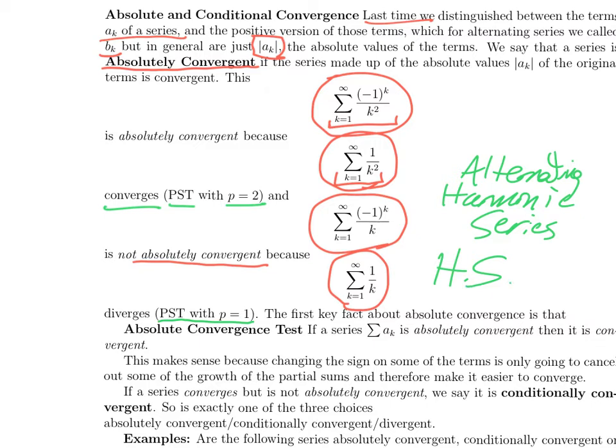That's kind of a funny term to say this series is absolutely convergent if some other series converges. The reason for the terminology is the following: if a series is absolutely convergent, then it is, in fact, convergent. So your absolute value converging forces you to converge.